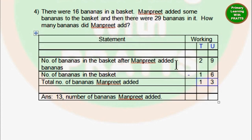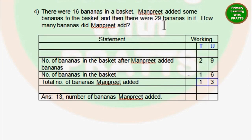Always remember when we are doing subtraction, the highest number will always be on top. So even if they put 16 bananas first, we will not use this as our first statement. Our first statement will always be the one which has the biggest number. So 29 will be our first statement. This is the rule we use for subtraction. With the help of these statements, you can finish all those sums on page 32.